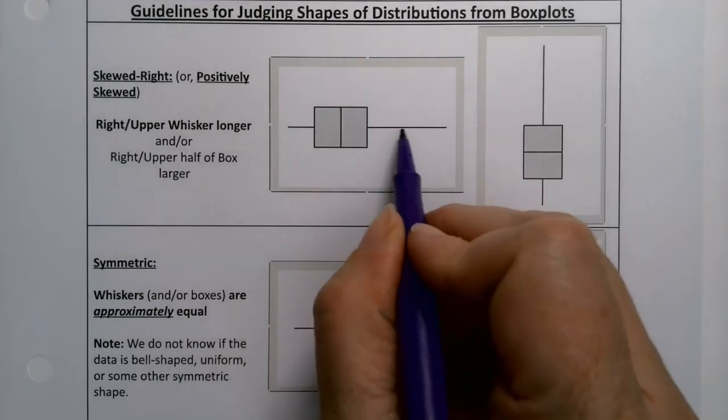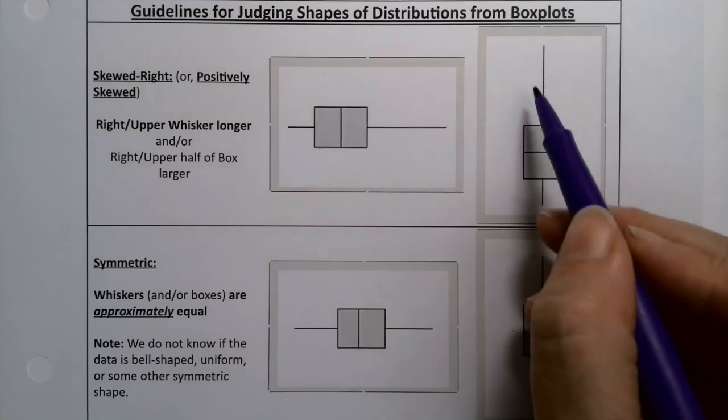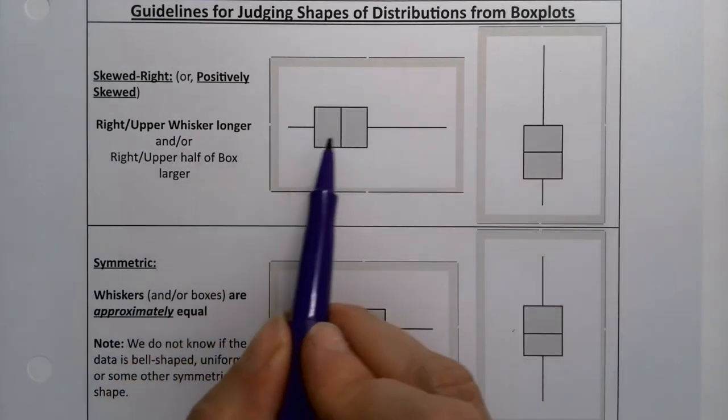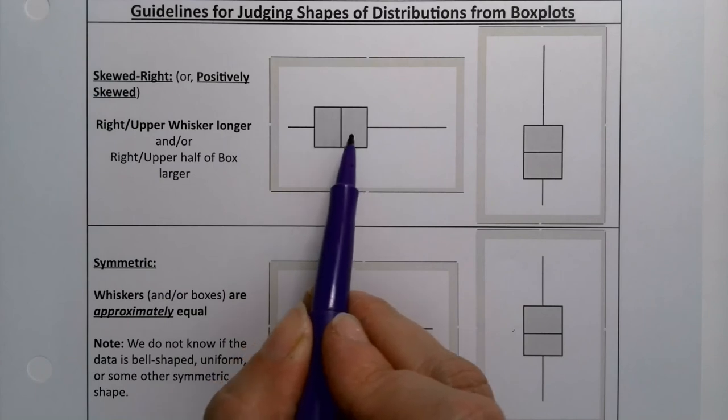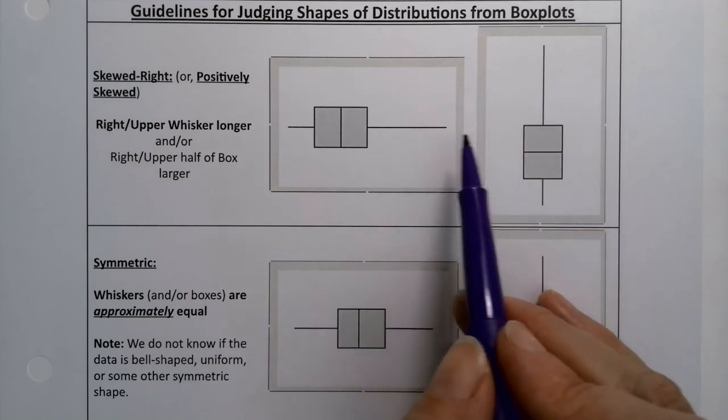If you're positively skewed, that means the whisker is longer on the right-hand side, the upper whisker, or the box is larger, which is not the case in this particular problem. So that long whisker right there means it's positively skewed or skewed right.